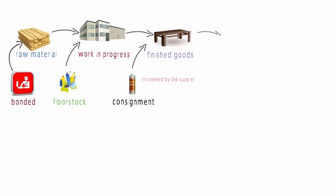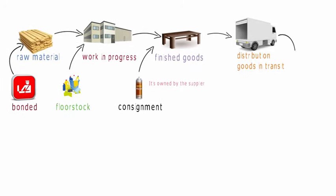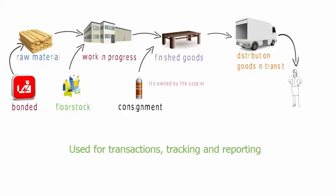The table has been sold and is loaded onto a delivery truck. This inventory being delivered is known as distribution inventory or goods in transit inventory. The inventory is now on its way to the customer. Defining inventory types helps identify the state and location of inventory and this can be used for transaction, tracking and reporting purposes.